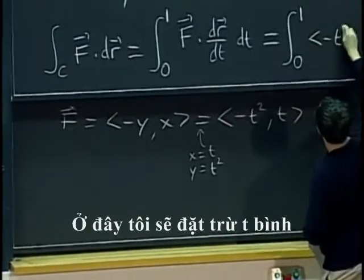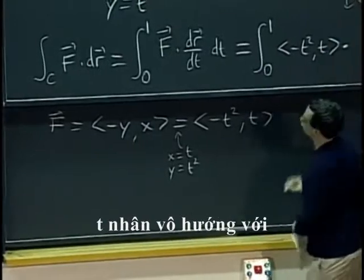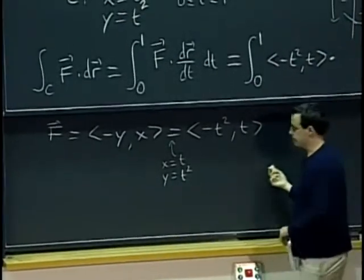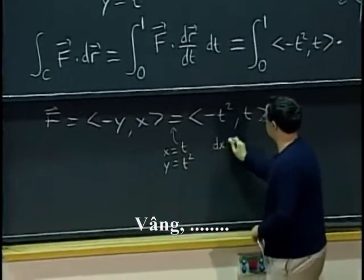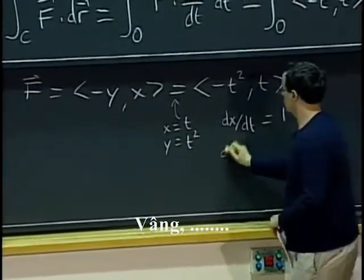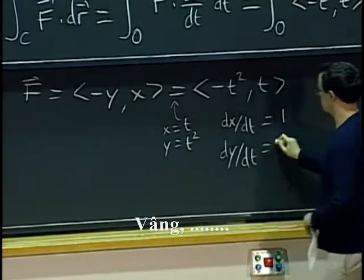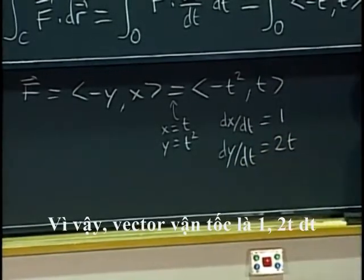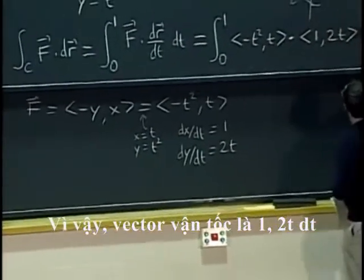Here I will put negative t squared, t — dot product. What is the velocity vector? dx/dt is just 1, dy/dt is 2t. The velocity vector is (1, 2t) dt.